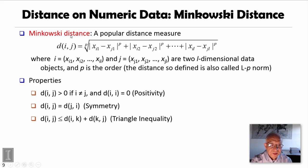The Minkowski distance, in general, has these properties. The first property is called positivity. It means the distance must be zero when they are identical, otherwise they are greater than zero. The second property, called symmetry, means the distance between i and j, distance between j and i, should be identical.